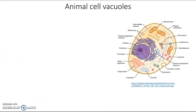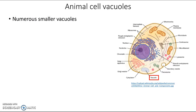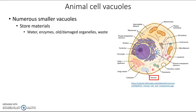Animal cells also have vacuoles, but rather than having one really large one, they tend to have several smaller ones. In this diagram of an animal cell you can see one little vacuole indicated. The main function of vacuoles in animal cells is to store various materials — such as water, enzymes, old or damaged organelles that need to be broken down, or waste products the cell needs to get rid of.